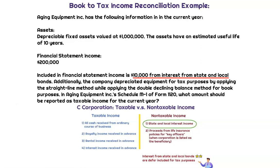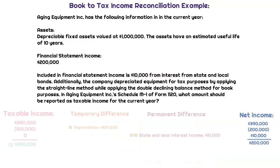They want us to calculate taxable income. The net income amount is $200,000. We know that we included $10,000 in state/local interest income and depreciated $200,000 when getting there. So we add $200,000 back to the total and subtract $10,000, giving us gross income of $390,000.